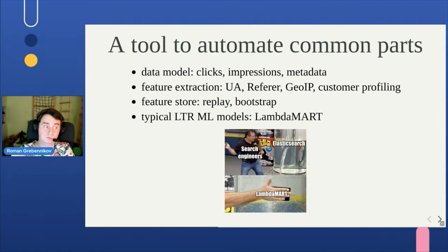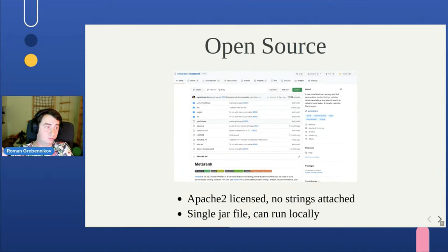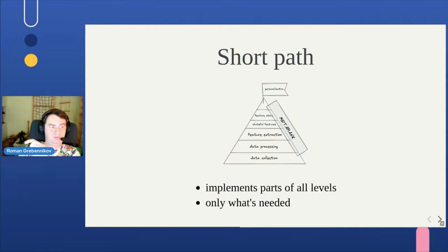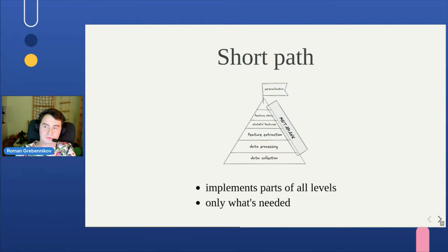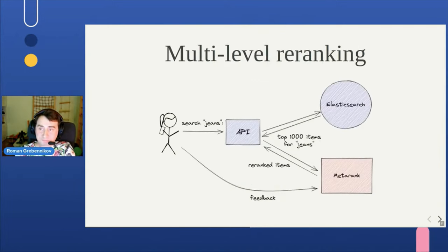We decided not to reinvent the wheel yet another time and made an open source tool called Metarank, which tries to automate all the data engineering part of data preparation for learned ranking. It's Apache 2 licensed, it's a single JAR file you can just run — you don't need a Kubernetes cluster to do a hello world. Metarank itself is just a short path across this pyramid of data engineering pain, implementing a very narrow subset of all the layers so you can achieve the personalization goal. It's not a general-purpose feature store or data processing framework — it's just an application. There's no place to type Python code; it's declaratively configured. From the bird's-eye view, Metarank is a secondary ranking system.